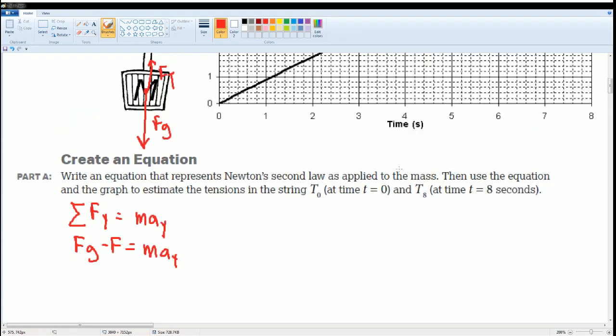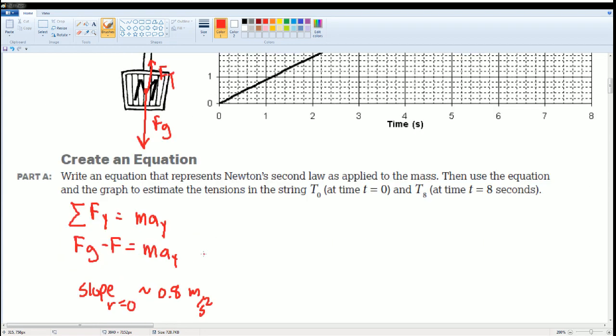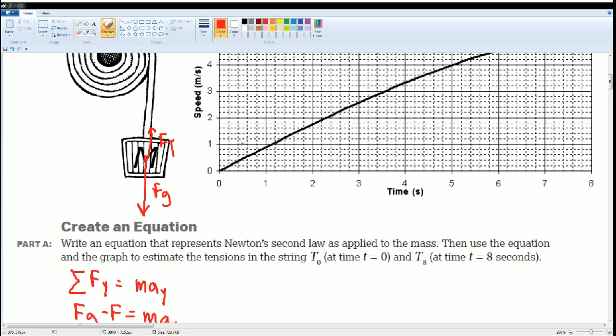So here the problem gives the slope, right? When R is equal to zero, it's roughly around 0.8 meters per second squared. So let's take a look right here at one second, it is at 0.8 meters per second. That's what it means.